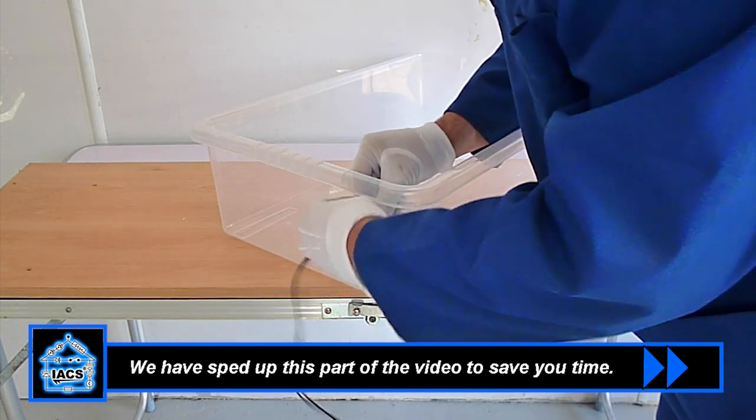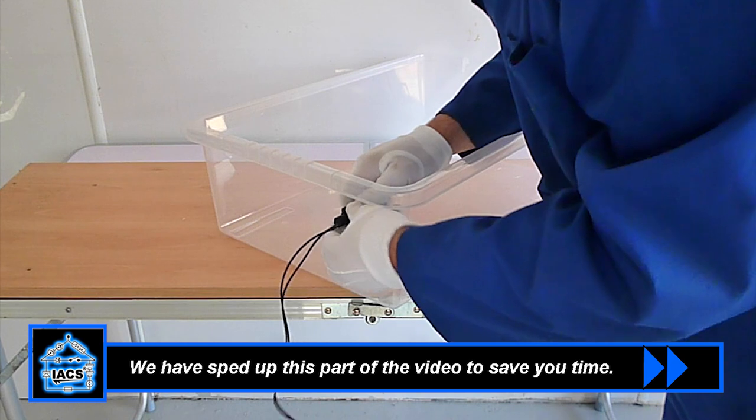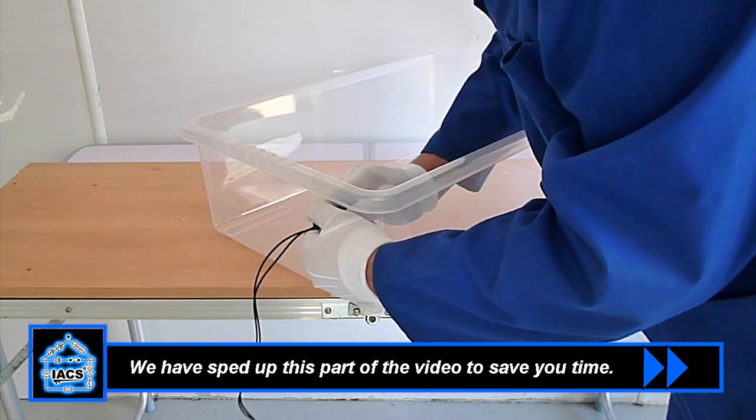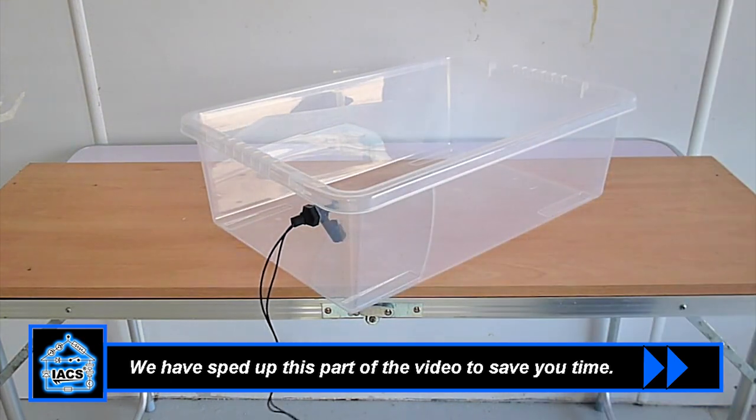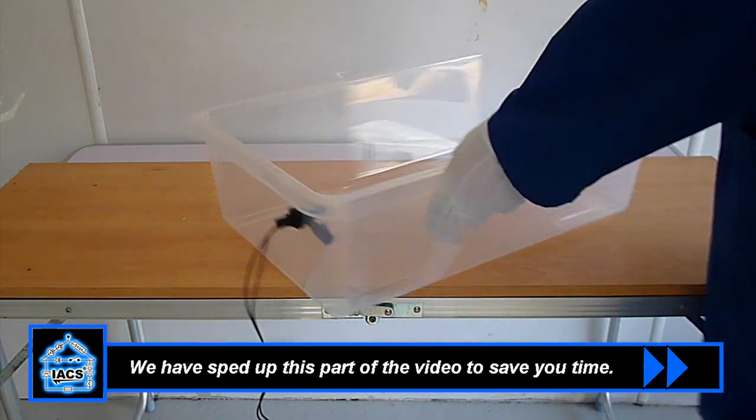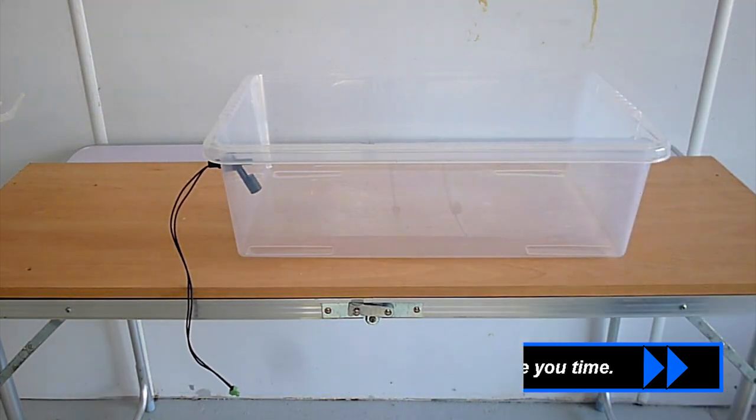You are probably wondering why you can't just route the power for the device you're switching directly through the float switch. We will explain this later. When we are done screwing the float switch in place with the barrel hanging down into the tank, we can connect the float switch to the board.